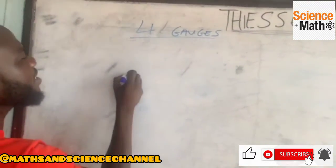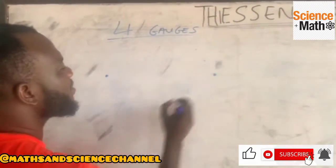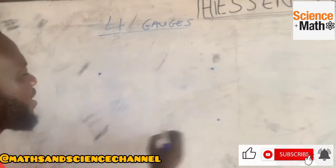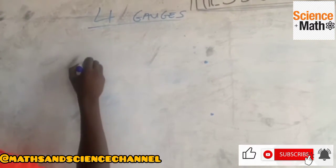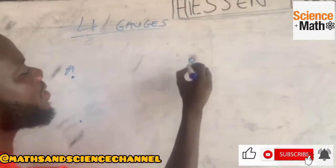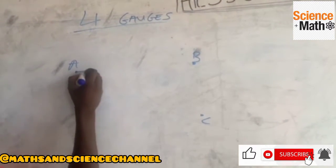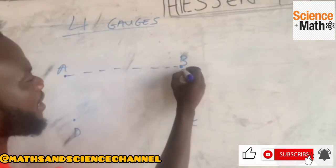So the gauges are going to be A, B, C, and D. We have A, B, C, and D, so we try to join them with dotted lines.